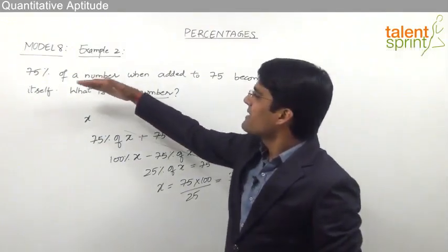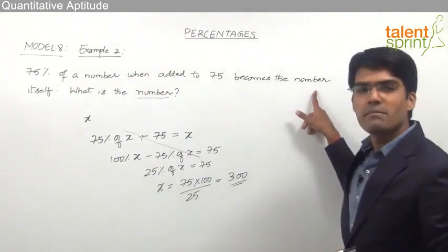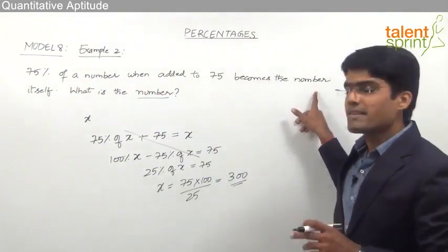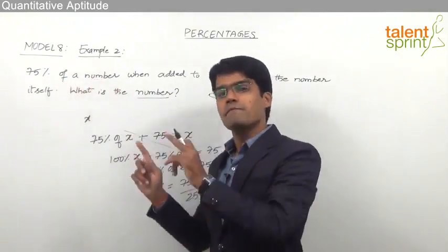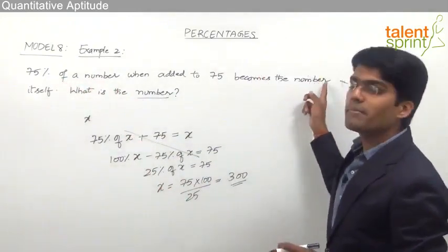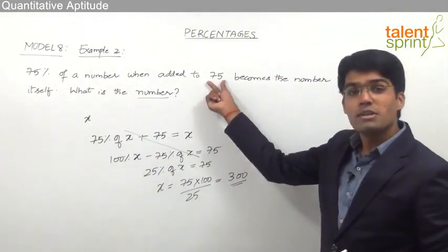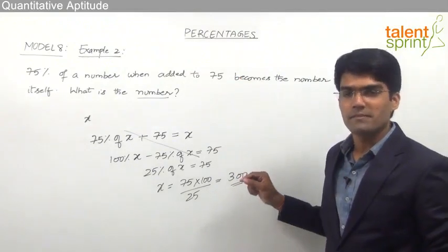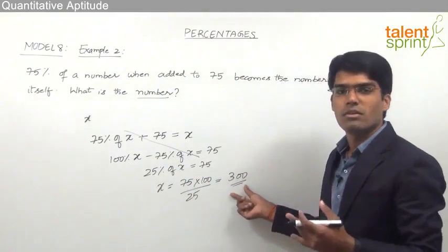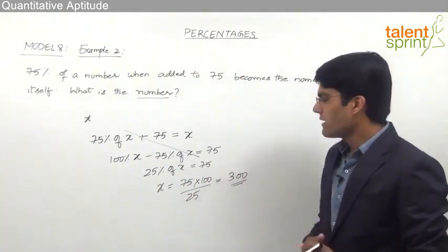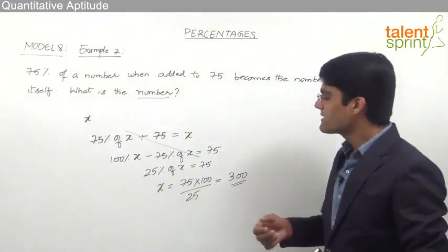Why? Because 75% of a number when added to 75 becomes the number itself — 75% of a number must always be added to 25% of that number to become the number itself. So this 75 is nothing but 25% of the number. We can directly say 25% is 75, and by cross multiplication 100% equals 300.